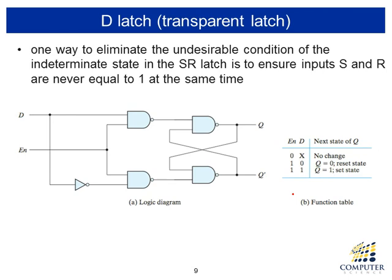The D latch is a special case of the SR latch where the S and R inputs are always complementary to each other. So we have only one input D, but still two outputs Q and Q-not. The basic operation of the D latch is a sub-case of the SR latch where SR is either one-zero or zero-one.